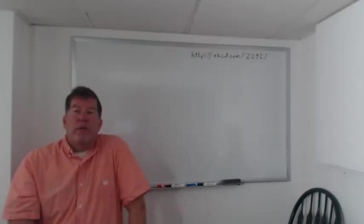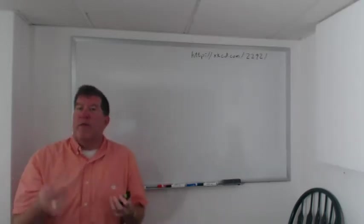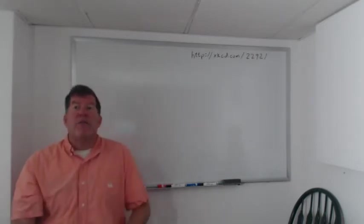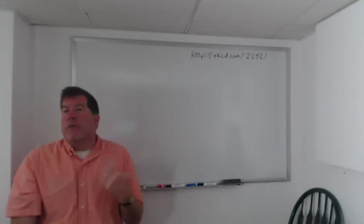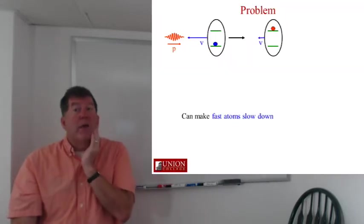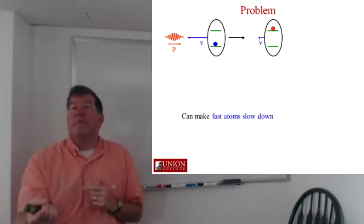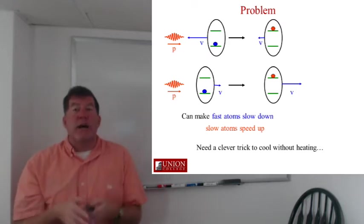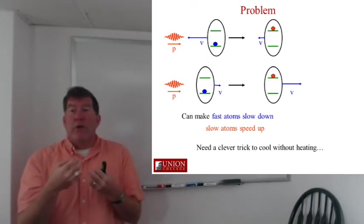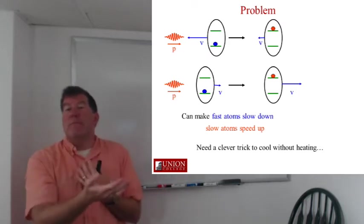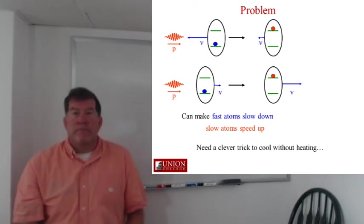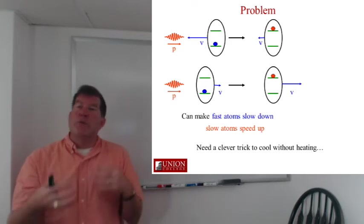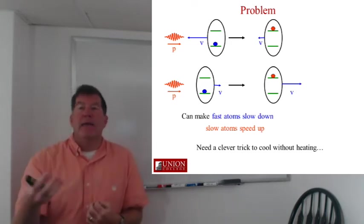But there's another problem here, which is if I start with a sample of atoms that are moving very fast, and I shine a laser to try and slow them down, I can make those fast atoms slow down. But I can also take atoms that are already moving slowly, and if I shine laser light on them, I can make them speed up. So these things would seem to cancel each other out. It seemed to be sort of fruitless to shine lasers on atoms because you're going to slow down some of the fast ones, you're going to speed up some of the slow ones, it's a wash in the end.